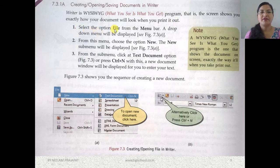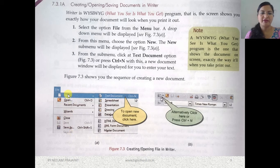First, select the option File from the menu bar. You can see this is the File menu. A drop-down menu will appear, and from this menu you have to choose the New option. When you click on New, you will get a sub-menu. From here you have to choose Text Document. Otherwise, you can also use the shortcut key Ctrl+N.